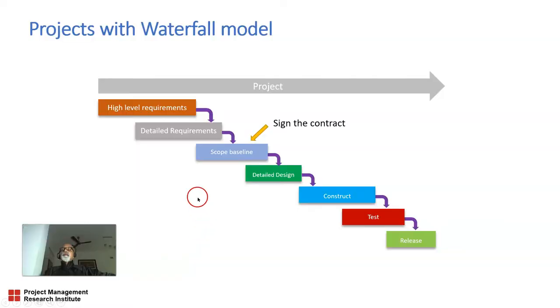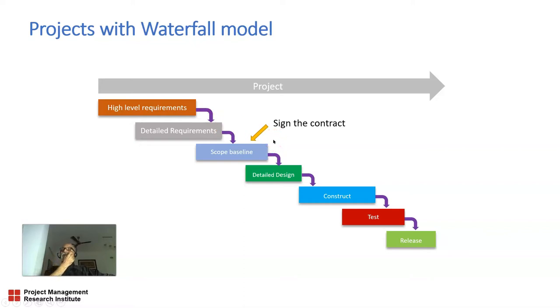Now I'll take you through these things in detail. In a waterfall model, first we define the high level requirements, then the detail requirements, then the scope is baselined, then we get into detailed design, then construction, then testing, and the release of the product. This looks like a waterfall — highly compartmentalized. After every phase there is a sign-off and a formal handover and takeover, and the project progresses in a series of stages like a waterfall.